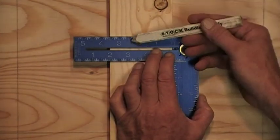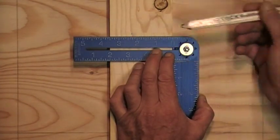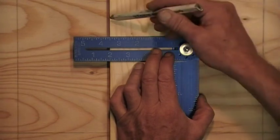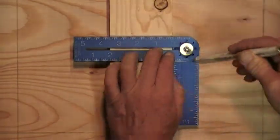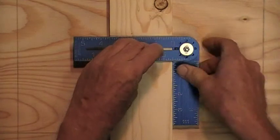For framing I've always liked a square with a one and a half inch blade like this for laying out studs. You can quickly and easily mark both sides of the studs so the layout is very clear.